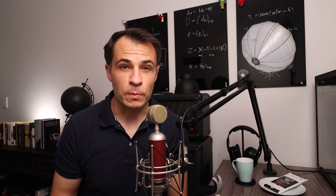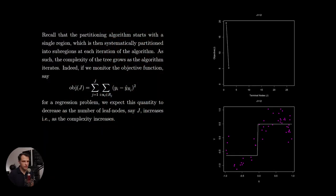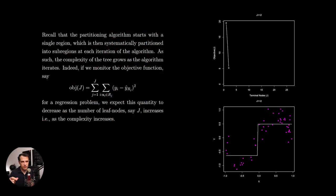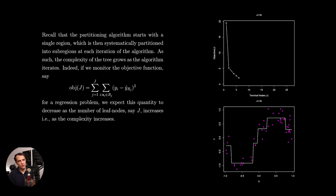I'll also link to the rpart help and technical documentation. Before we jump into the analysis, I just want to include a little technical note on how the rpart library specifically conducts a validation analysis. Recall that the partitioning algorithm starts with a single region, which is then systematically partitioned into sub-regions at each iteration of the algorithm.